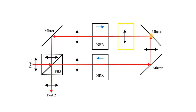The light comes here, reflects from a mirror, reflects from another mirror, then passes through this box which represents a vertical polarizer — so no change to the light. No change again here because it's against the blue arrow. It comes here, reflects from the mirror, and exits through port 2. So all the light starting from port 1 is transferred to port 2.